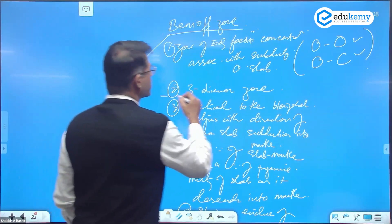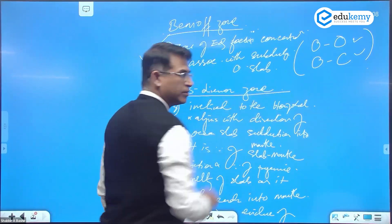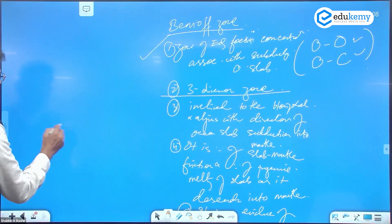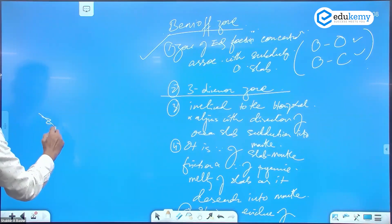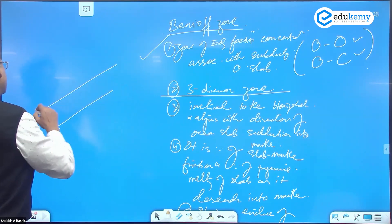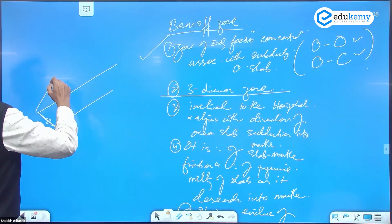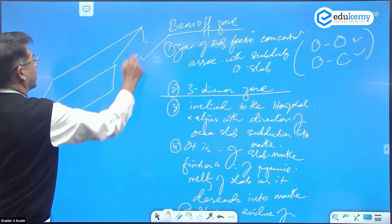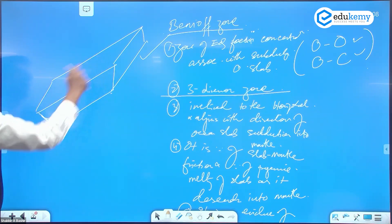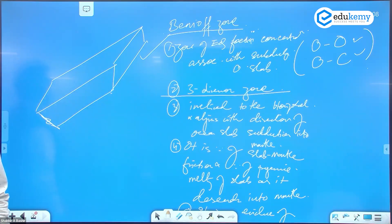Second point: it's a three-dimensional zone. It's not a plane, because it will have some thickness. It has thickness, it has width, and it also has length. You can imagine it has thickness, width, and length — it's a three-dimensional zone.